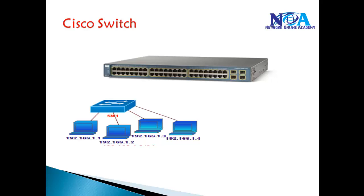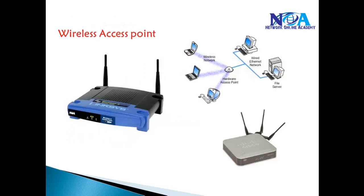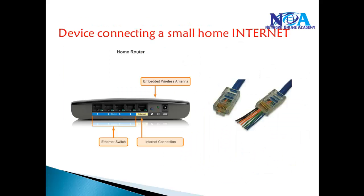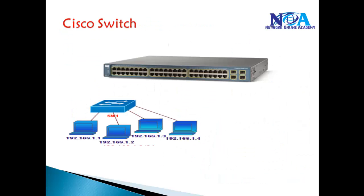In this section we'll talk about different networking devices used to set up a network. In the previous section we had a basic overview — a network is the interconnection of devices to share information and resources. Now we get into more detail on the different types of devices we use: switches, access points, routers, firewalls, IP phones, and also some small devices used in home internet connections. Let's get started.